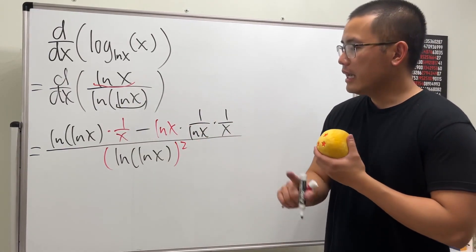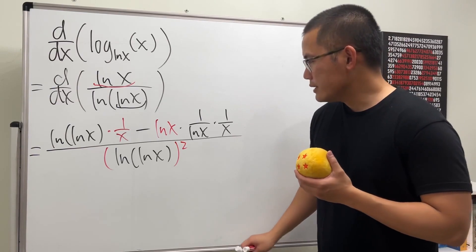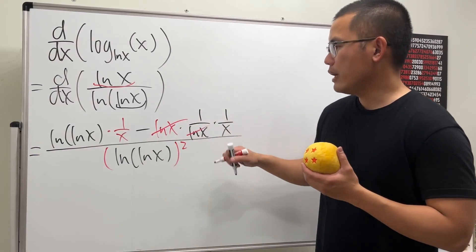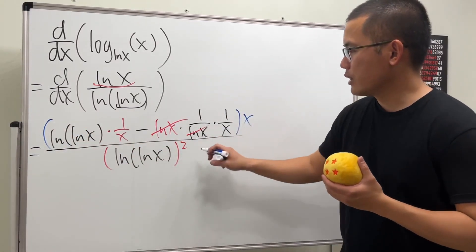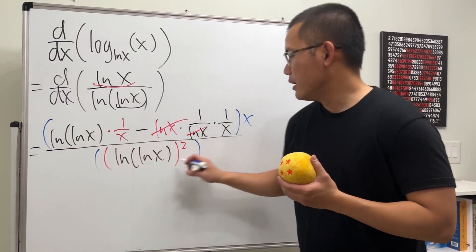We see that these can cancel, and that's pretty much it. And I'm just going to multiply the top and bottom by x so you can get rid of the common denominator. And then we will see